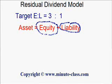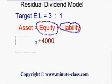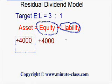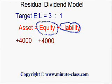Now let's say that in this year a company has earned $4,000. As a result, the equity will increase by $4,000. Similarly, the assets will immediately increase by $4,000 also, while the liability will remain constant.